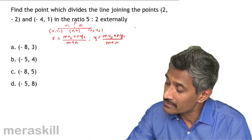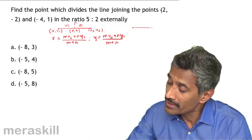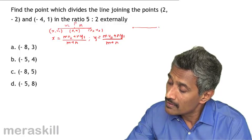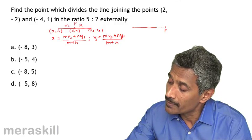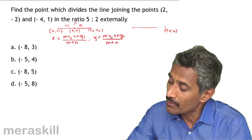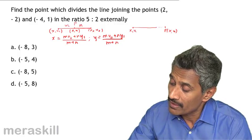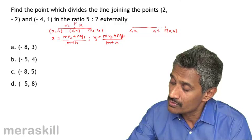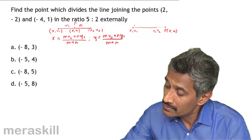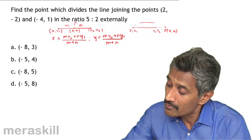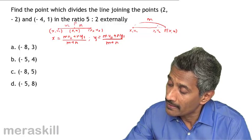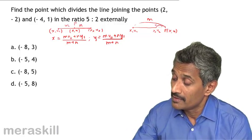But sometimes, you may even have a situation like this where the points are these and this is the point P whose coordinates are (x, y), and this is (x1, y1) and this is (x2, y2). And this is M and this is N.